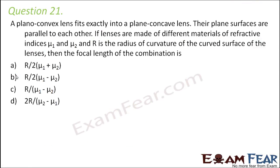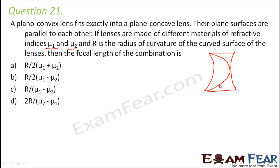Question number 21. A plano-convex lens fits exactly into a plano-concave lens, with their plane surfaces parallel to each other. If the lenses are made of different materials with refractive indices mu1 and mu2, and R is the radius of curvature of the curved surfaces, the focal length of the combination is to be found. The arrangement has the concave lens and the convex lens fitting exactly into it.